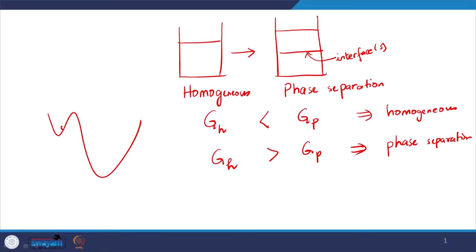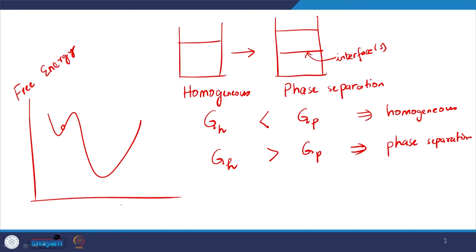Let us say my system is somewhere in my free energy landscape with reference to some arbitrary system coordinate, which can be a thermodynamic variable like temperature or volume fraction. Clearly in this case, this state has a lower free energy, but if I start my system from here, I will tend to be close to this local minima because it is easily accessible to me.